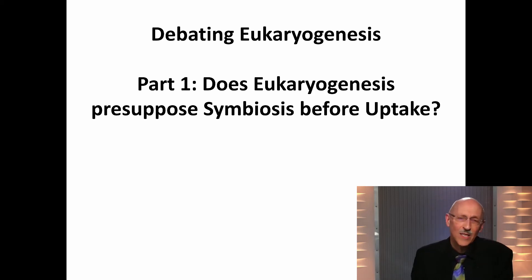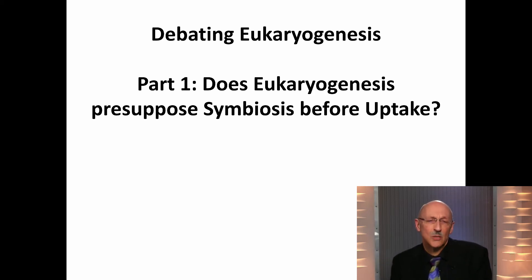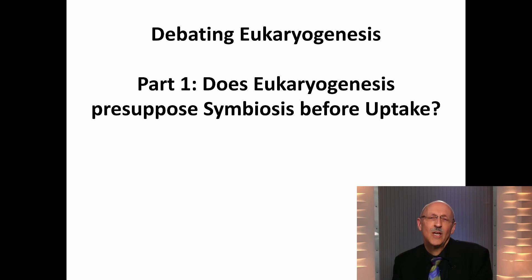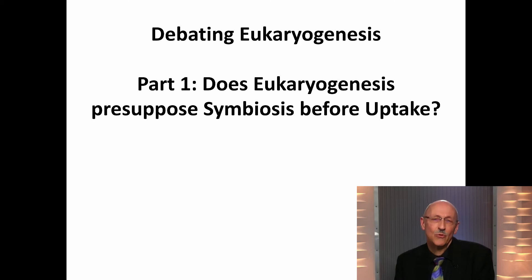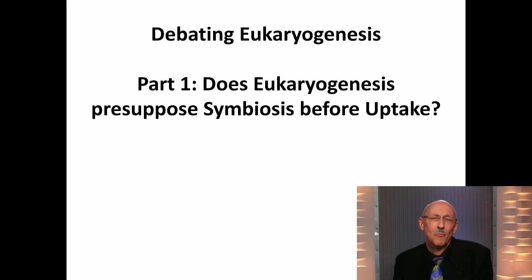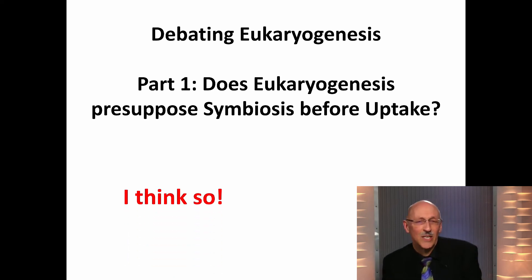This created a system in which evolutionary pressures arose that would give rise to all kinds of adaptations we now see as the eukaryotic hallmarks. Why do I think that eukaryogenesis supposes a form of symbiosis before uptake? Well, the most important thing is that if you have two metabolic organisms that have not co-evolved, that have not already integrated part of their metabolism, and they come together, the chance that they stick together and that you really get endosymbiosis after uptake is pretty slim. While if there is already partial integration, retention becomes at least somewhat likely.